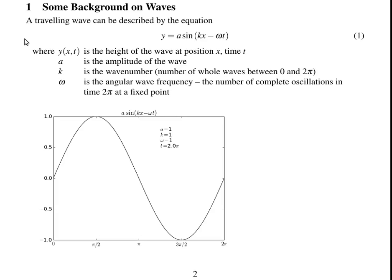A wave of a single wave number can be described by an equation y equals a sine kx minus omega t, where y is the height of the wave, a is the amplitude of the wave, k is the wave number, so this is the number of whole waves, whole oscillations, that can fit between 0 and 2π.